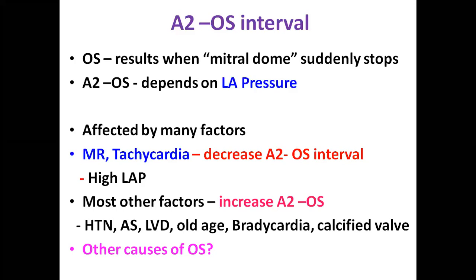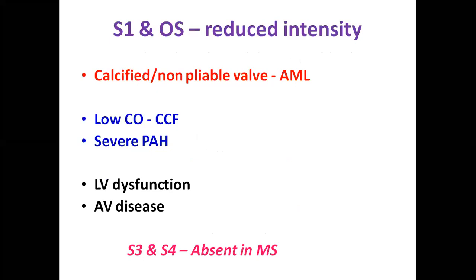Both S1 intensity and opening snap go together — when the leaflet is pliable you get loud S1 and opening snap; if leaflets are calcified and non-pliable, especially the anterior mitral leaflet, you get soft S1 and absent opening snap. Low cardiac output and severe pulmonary arterial hypertension also cause soft S1. Remember that S3 and S4 are absent in mitral stenosis because both require an unobstructed AV valve. Wells index — used historically to assess severity of MS before echo — required a phonocardiogram and ECG; it is only for the exam and not used nowadays.